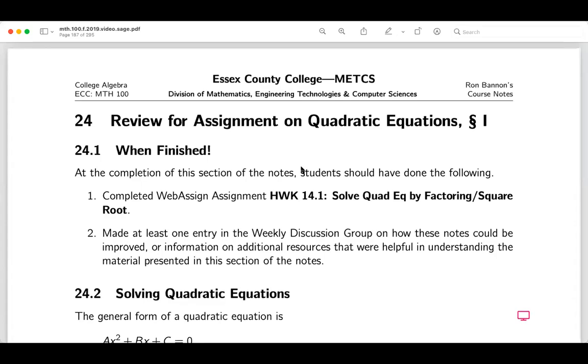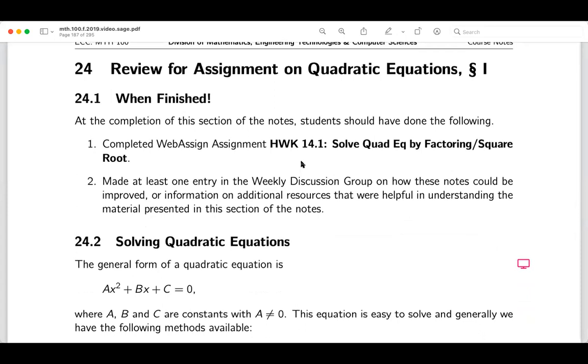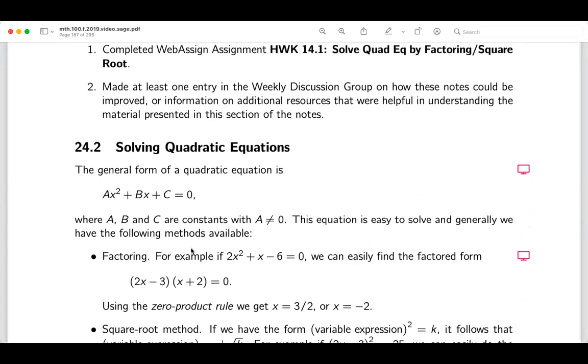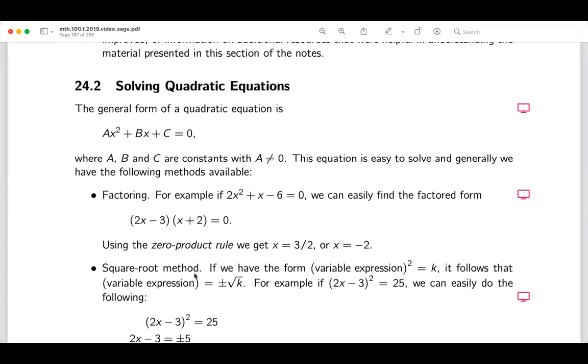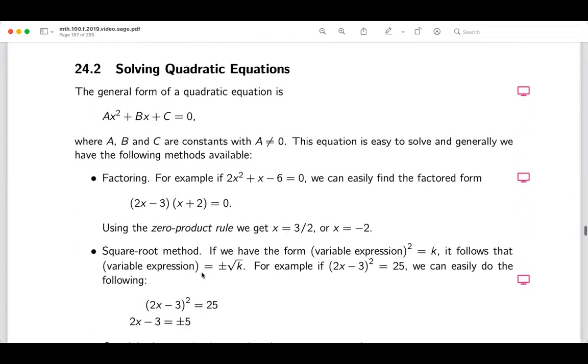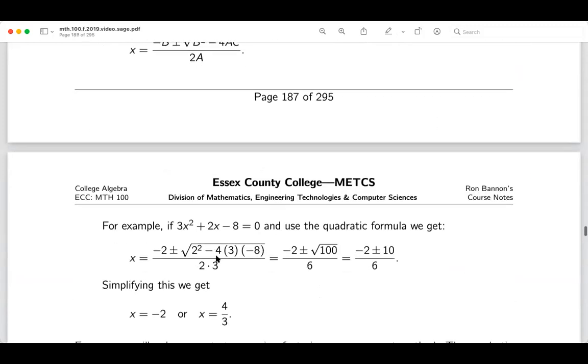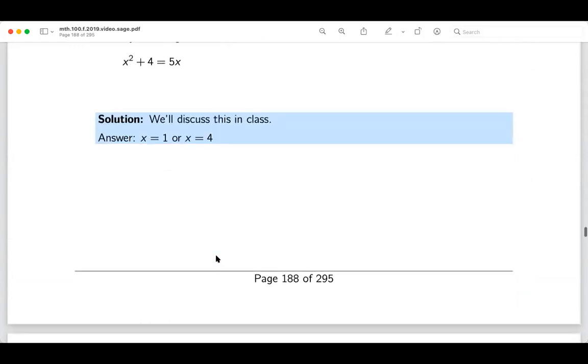Okay, we're in section 24 of the notes. This is the assignment on quadratic equations. We've covered the introduction, solving quadratic equations in standard form Ax squared plus Bx plus C equals zero. We discussed the ways I would like you to try doing these: factoring, the square root method, and the quadratic formula, although this is an introduction. I'm not going to use the quadratic formula unless expressly stated. I would prefer that we derive the formula later when we get to completing the square.